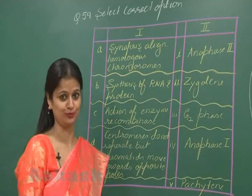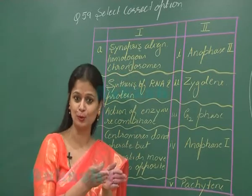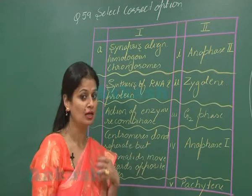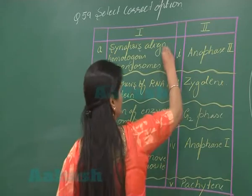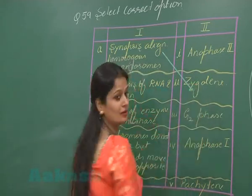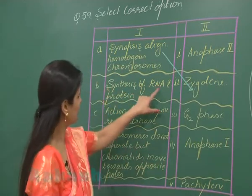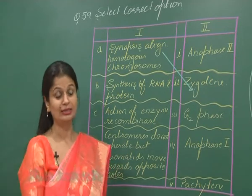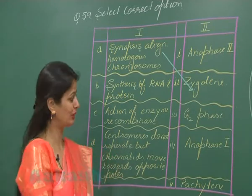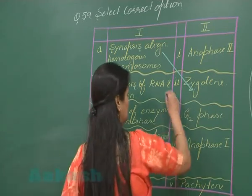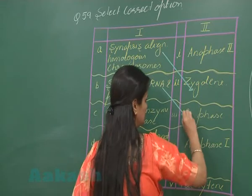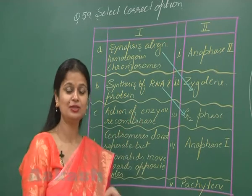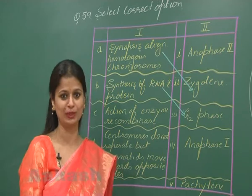Question number 59: we have to match the correct options. Option A — synapsis aligns homologous chromosomes. The pairing of homologous chromosomes is known as synapsis and it occurs during the zygotene phase, so A matches with 2. Option B — synthesis of RNA and protein during the cell cycle — this occurs during G1 phase and G2 phase, so B matches with 3.